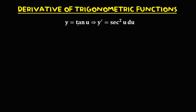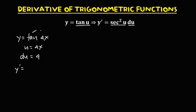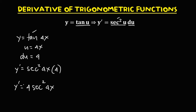For the derivative of tangent u, that's secant squared u times du. So if we have y equals tangent 4x, u equals 4x and the derivative of u is 4. Since the derivative of tangent is secant squared u, we have secant squared 4x times the derivative of u. So y prime is equal to 4 times secant squared 4x.